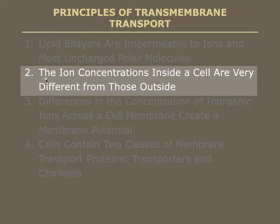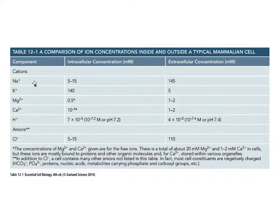The ion concentrations both inside and outside the cell are very different. Their composition is kept different because of their inability to pass through the lipid bilayer, and that ability allows nature to build up an electrical force or concentration force along any complete membrane such as a plasma membrane. Although all ions are important, some are more important than others. The most common and important are listed in this table: sodium, potassium, magnesium, calcium, protons, and chloride ions play significant roles as we'll see in this and subsequent chapters.